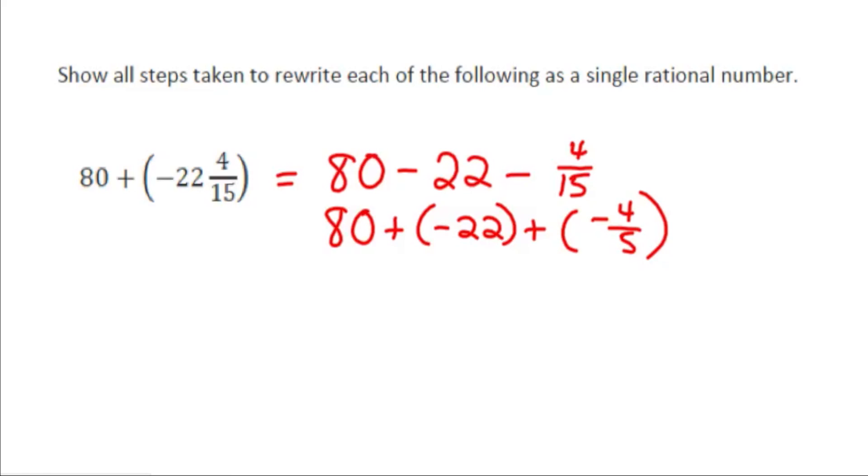The first two expressions are exactly the same. Subtracting is the same as adding a negative. In order to use our properties, let's take the whole numbers and do those first. So 80 plus negative 22, which is the same as 80 take away 22, well that part would be 58. So we have 58 plus the negative 4 fifteenth or 58 minus 4 fifteenths.